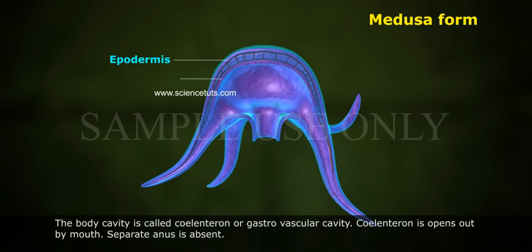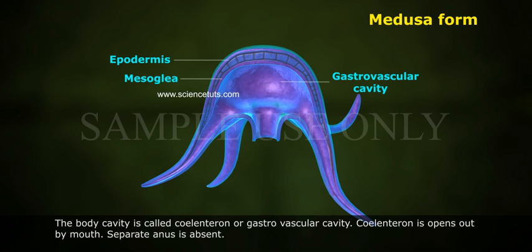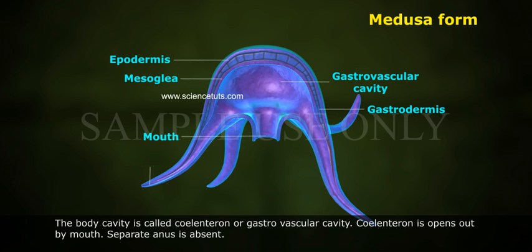The body cavity is called the coelenteron or gastrovascular cavity. The coelenteron opens out by the mouth. A separate anus is absent.